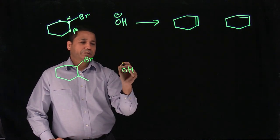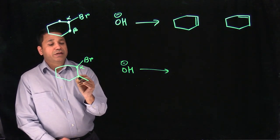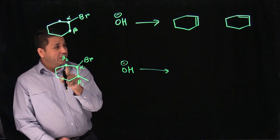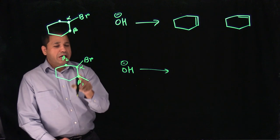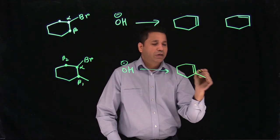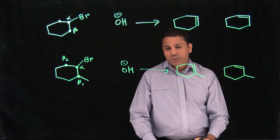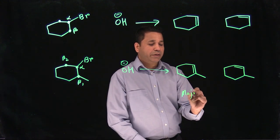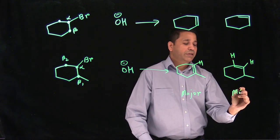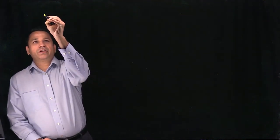If we modify the ring example by adding a CH3 group, then we have beta 1 and beta 2 that are different carbons. We get two products: a double bond between alpha and beta 1, and a double bond between alpha and beta 2. The product with only one hydrogen across the double bond is the major product, while the one with two hydrogens is the minor product.